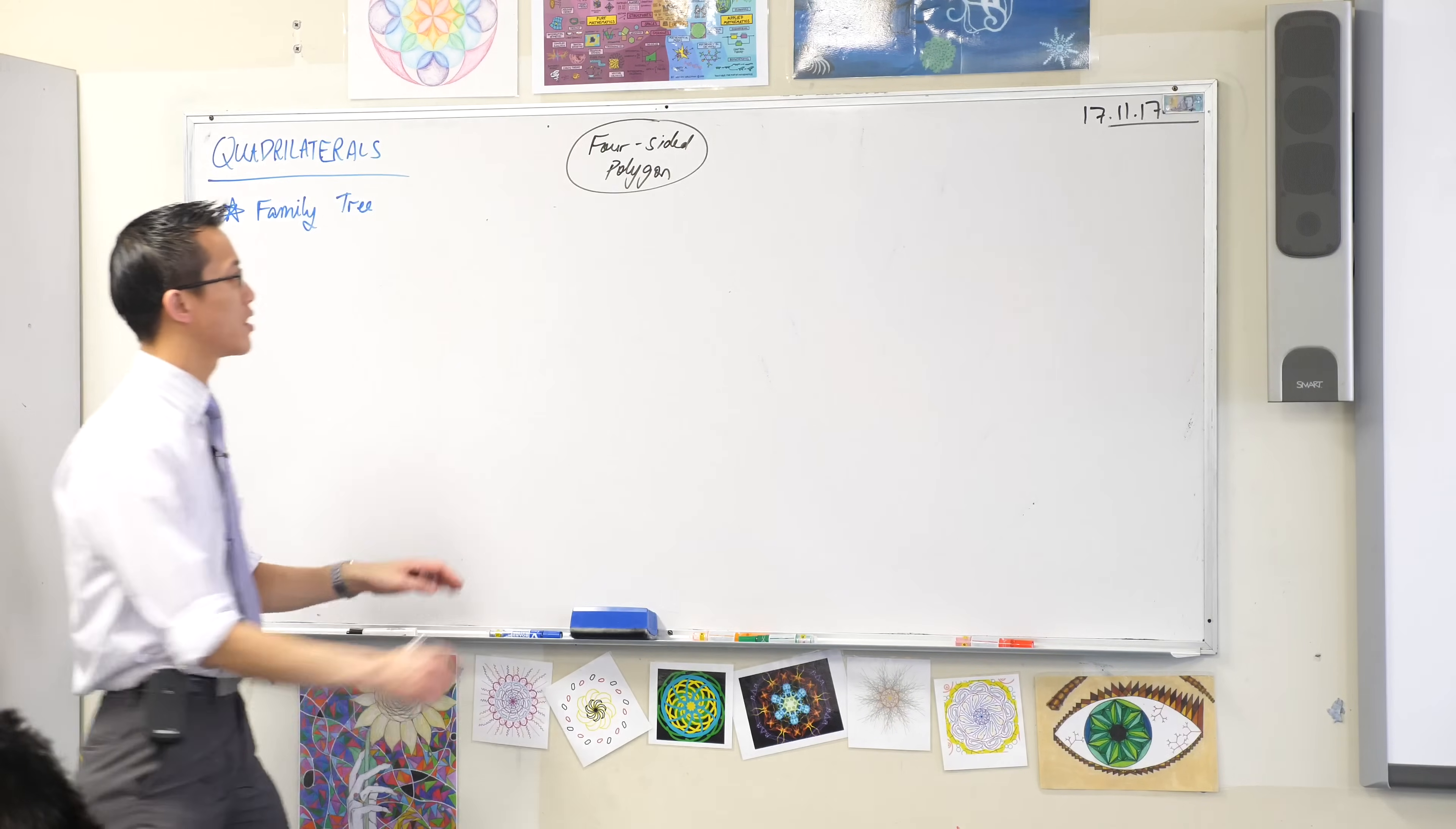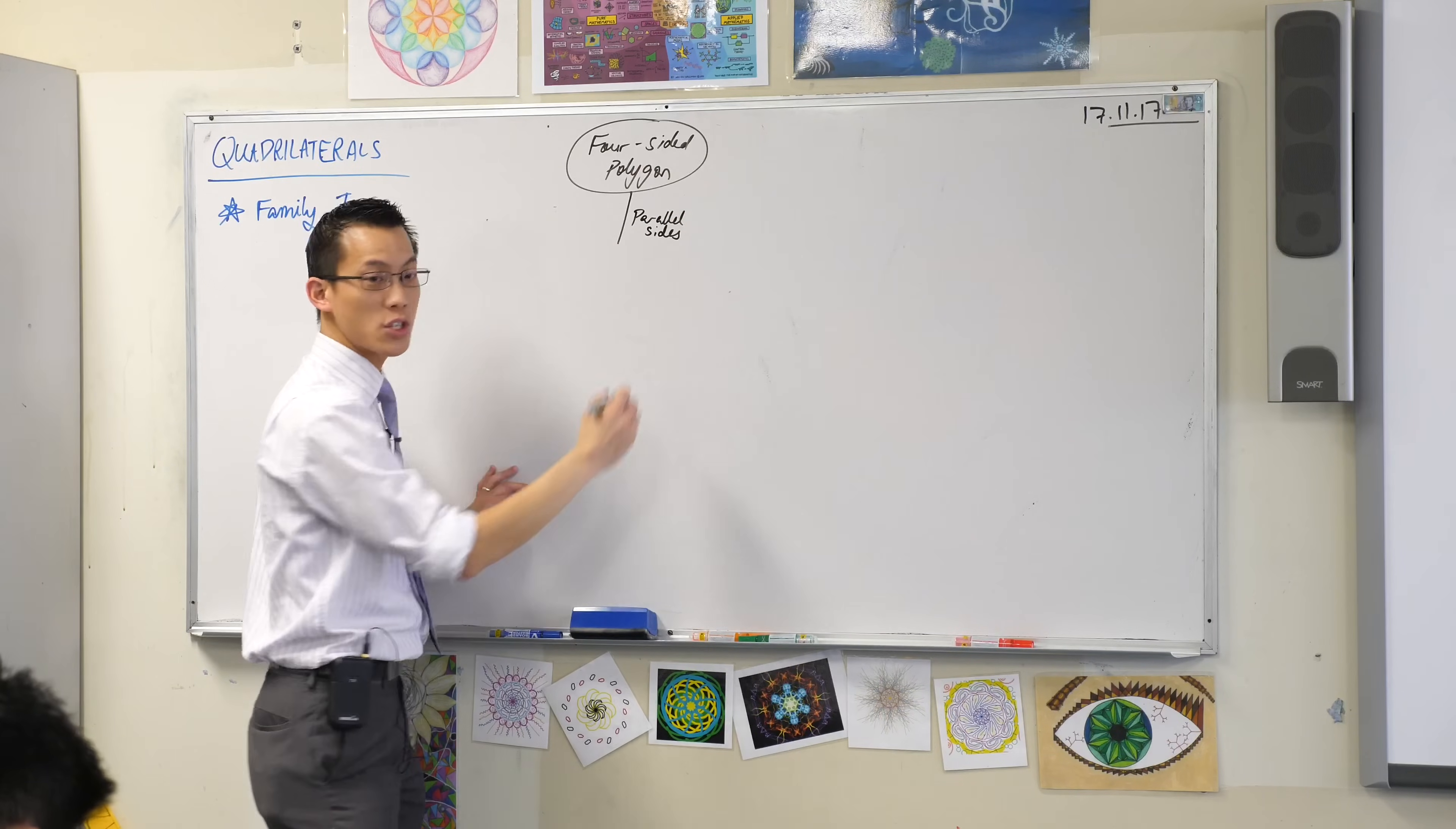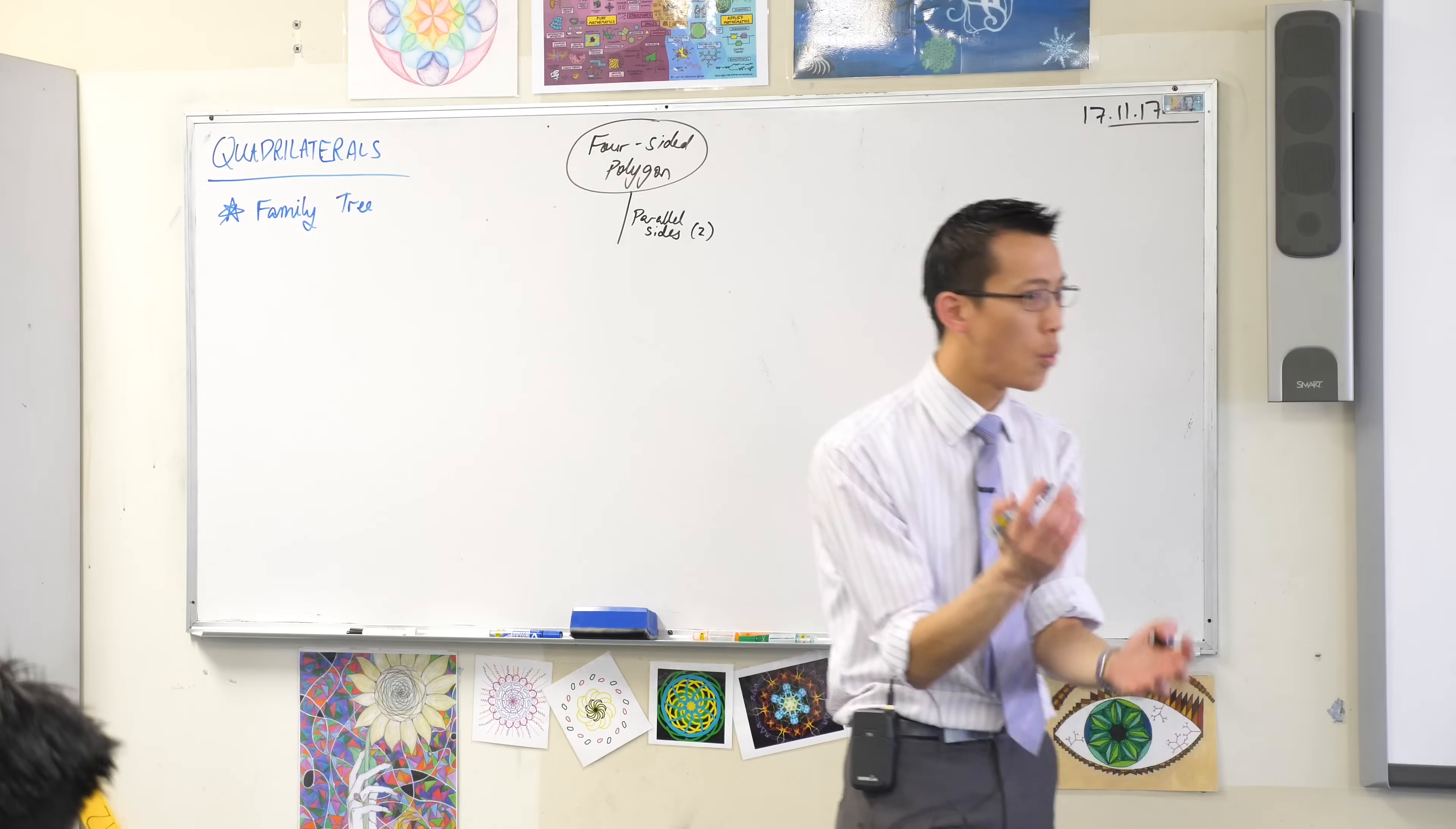So the first thing we're going to do is that if we take our four-sided polygon, and we make a pair of sides parallel. Parallel sides. Just one pair. So I'm going to say parallel sides, there are two of them. If you have a four-sided polygon and there's one pair of parallel sides, there's two sides that are parallel, what kind of shape do you have?